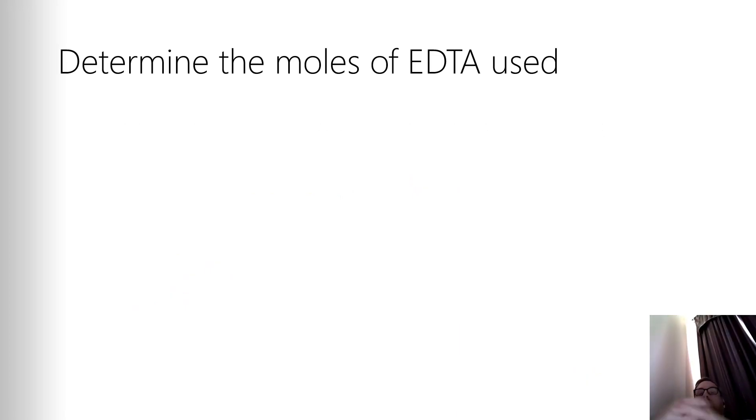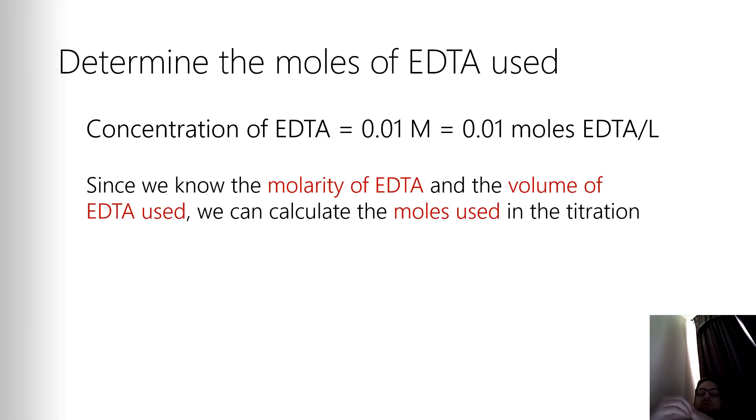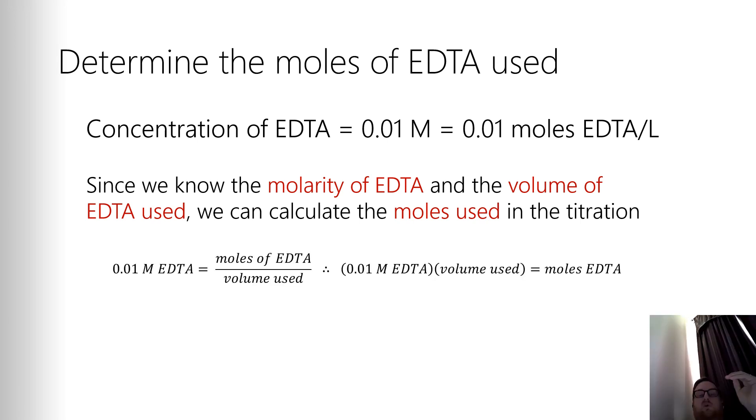So the next step is to use that and the known concentration to determine how many moles of EDTA you used. The concentration of the EDTA is 0.01 molar, which means it's 0.01 moles of EDTA per liter. Since we know the molarity of the EDTA and the volume of the EDTA used, we can rearrange the equation for molarity to determine the moles used. So the calculation is pretty straightforward. I can rearrange that equation since I know the volume and the molarity. I can move the volume over so that it's the molarity times the volume equals the moles of EDTA that I used in the system.